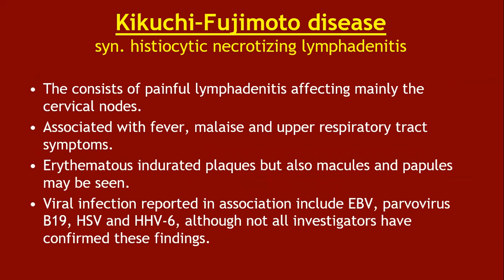Kikuchi-Fujimoto disease, or histiocytic necrotizing lymphadenitis, consists of painful lymphadenitis affecting mainly the cervical nodes, with associated fever, malaise, and upper respiratory tract infection. Erythematous indurated plaques, macules, and papules may be seen. Viral infections reported in association include EBV, parvovirus B19, herpes simplex virus, and herpesvirus 6, although not all investigators have confirmed these findings.